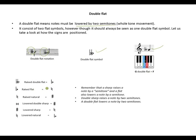When you raise a double flat by a semitone, you get one flat. When you raise a flat, you get a natural — because you have cancelled the flat sign. When you raise a natural, you get a sharp sign.